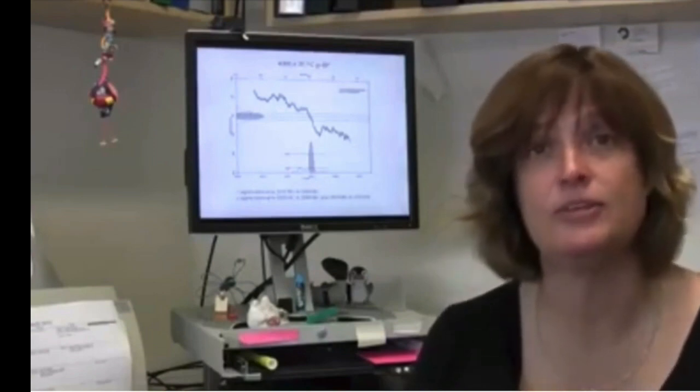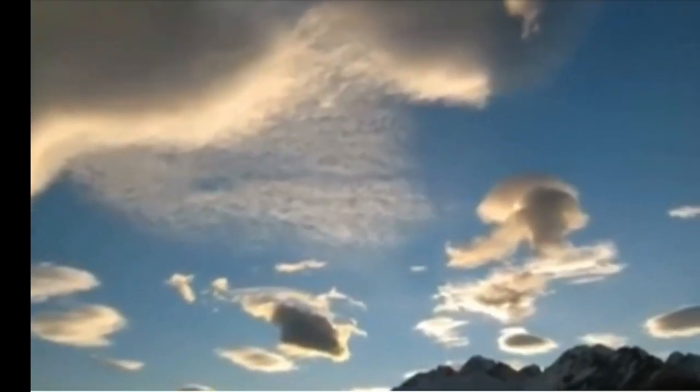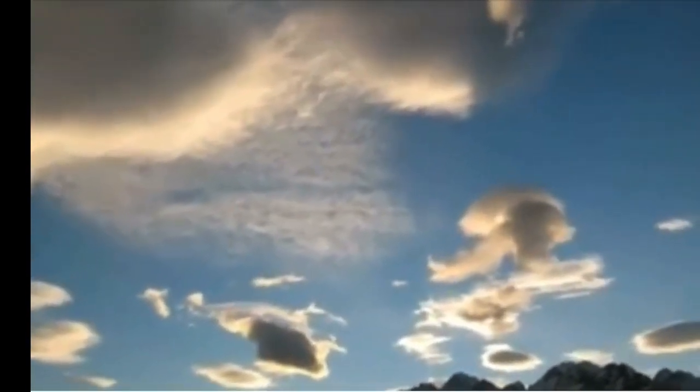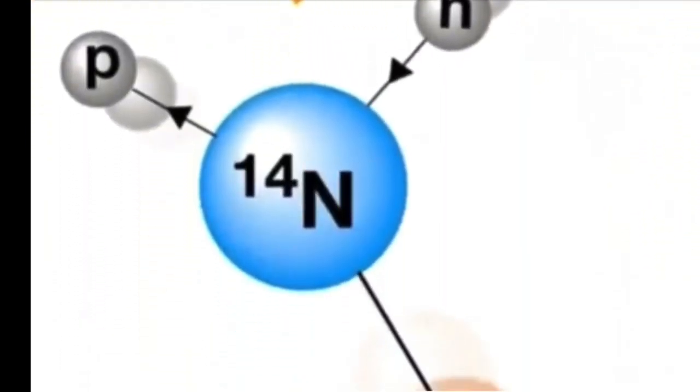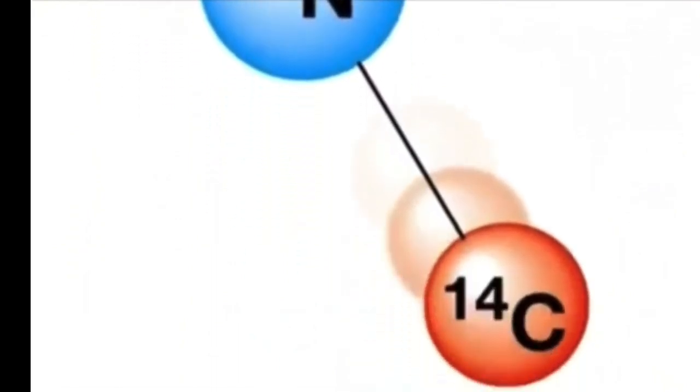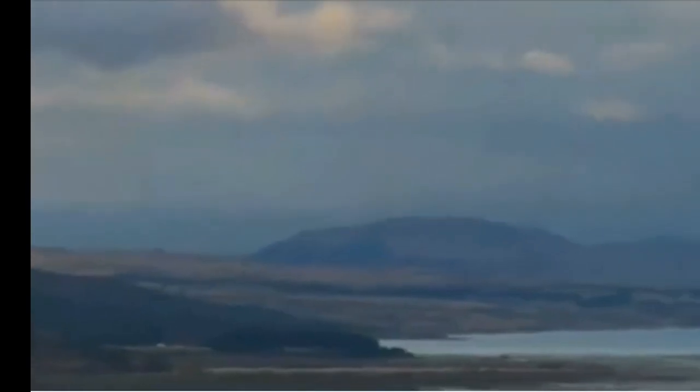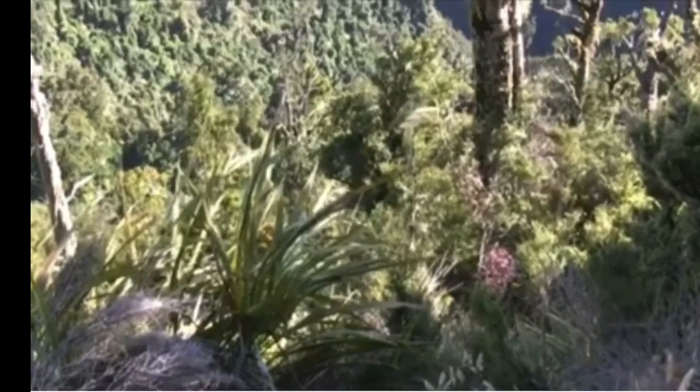All living things contain carbon, and there are three naturally occurring isotopes of carbon: carbon 12, 13, and 14. Carbon 14 is naturally radioactive. It's formed in the upper atmosphere through the interaction of cosmic rays with nitrogen atoms, and that carbon 14 that's been formed is rapidly oxidized as carbon dioxide and gets incorporated into the atmosphere.